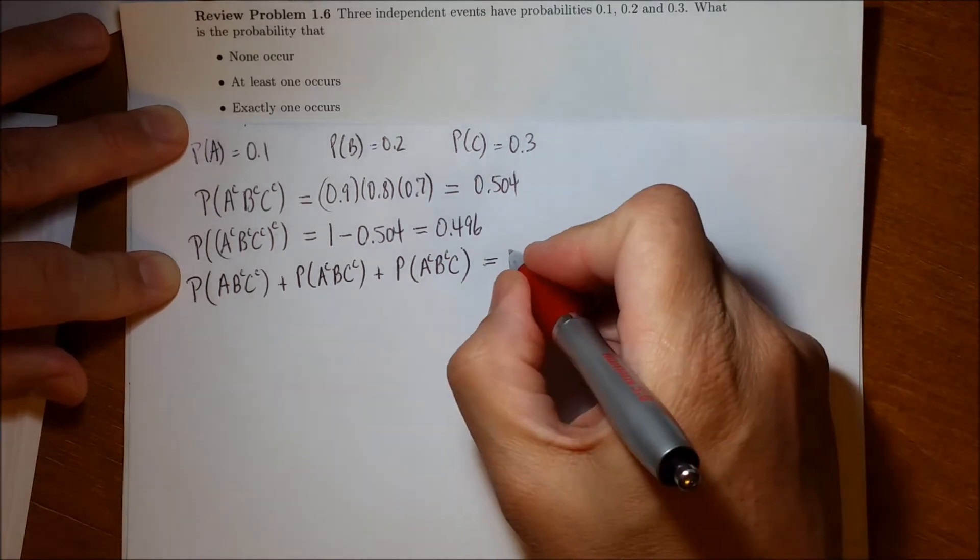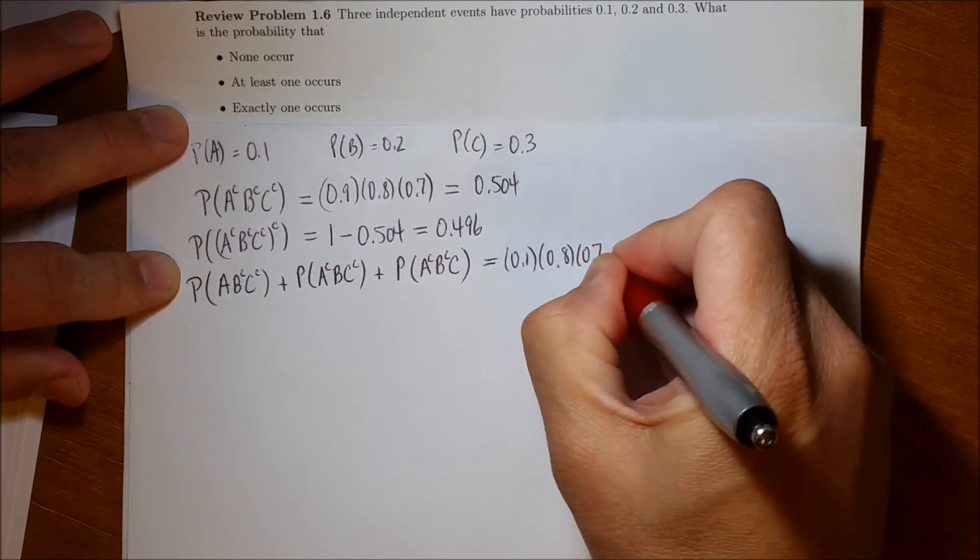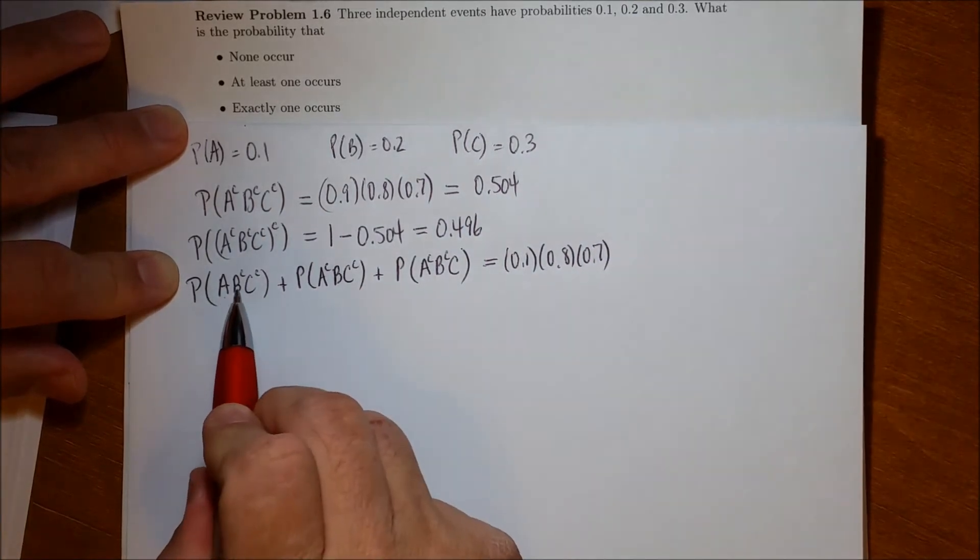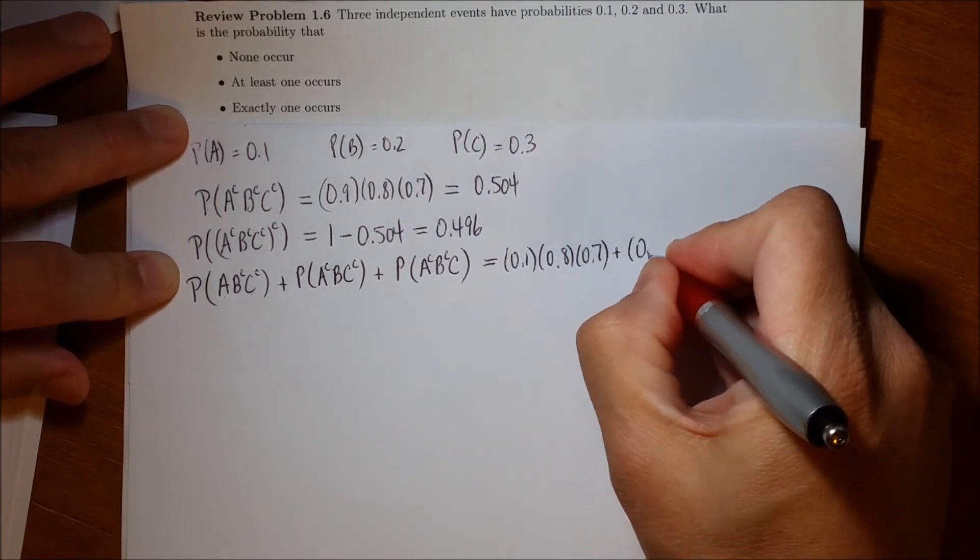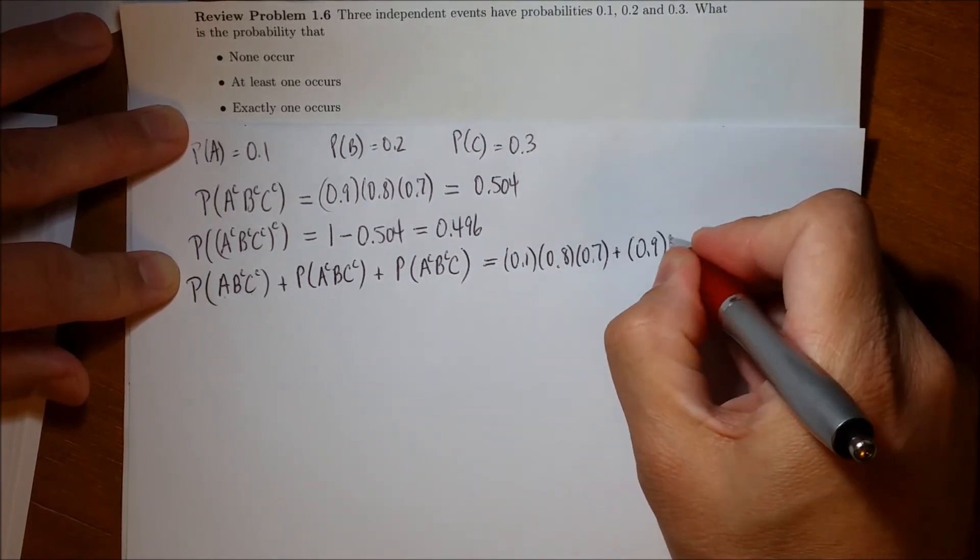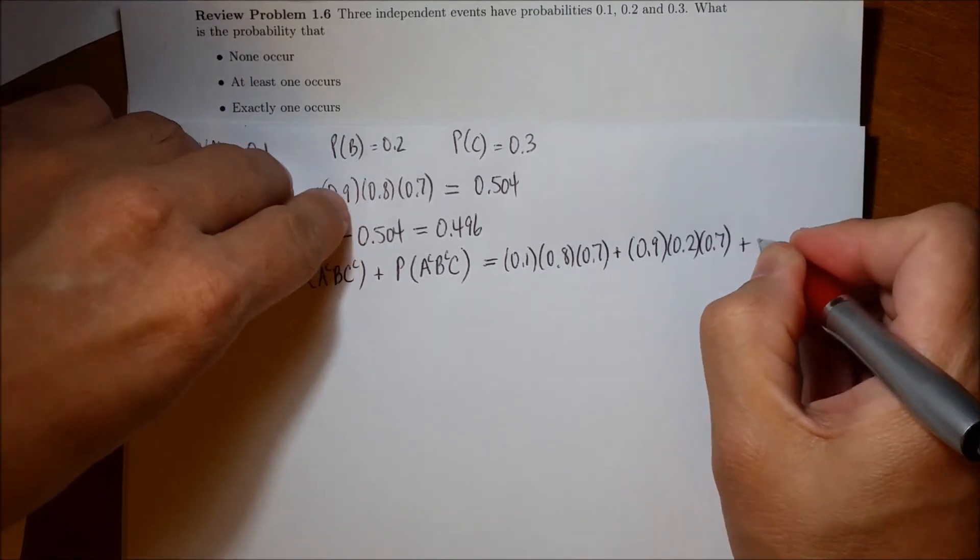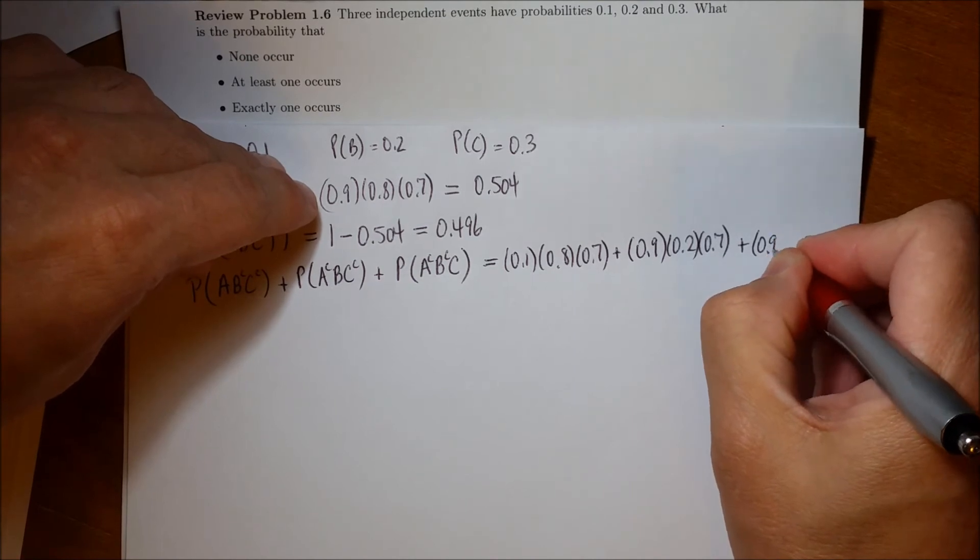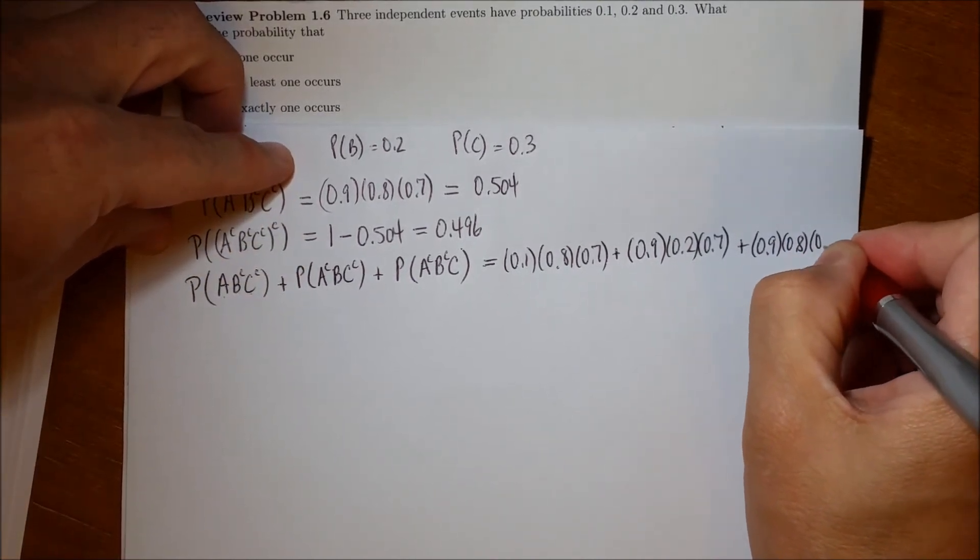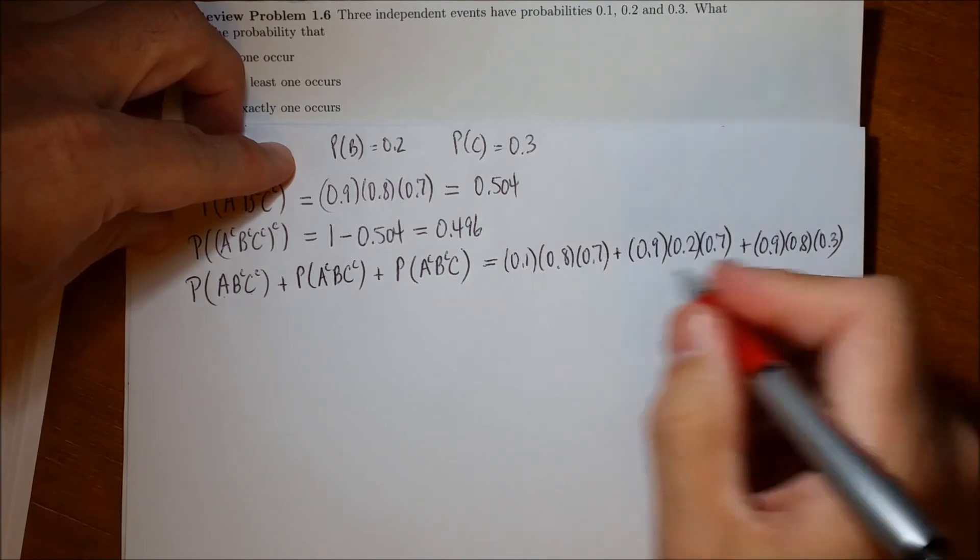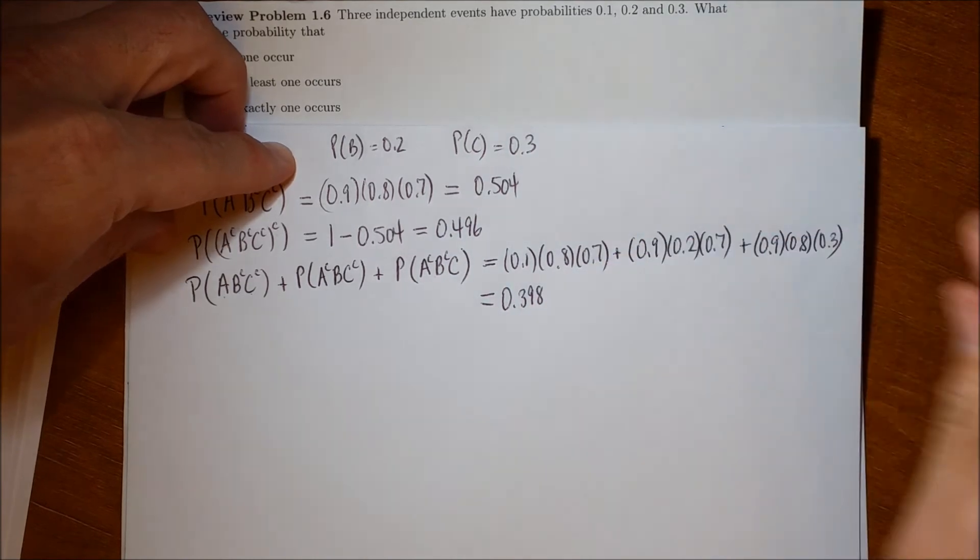And so this is going to be equal to 0.1 times 0.8 times 0.7, the chance of A happening, B does not happen, C does not happen, plus the probability that A does not happen but B happens and C does not happen, plus the probability that A does not happen and B does not happen but C does happen. And if I did the arithmetic correctly, that's equal to 0.398.